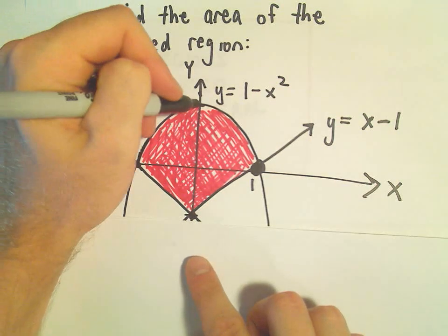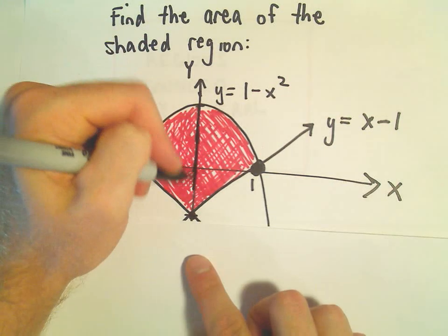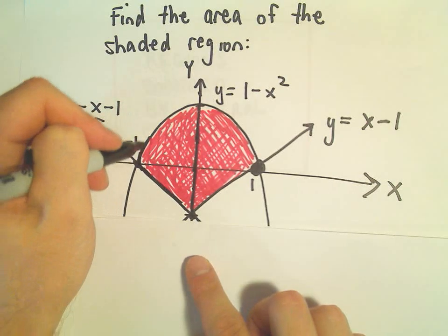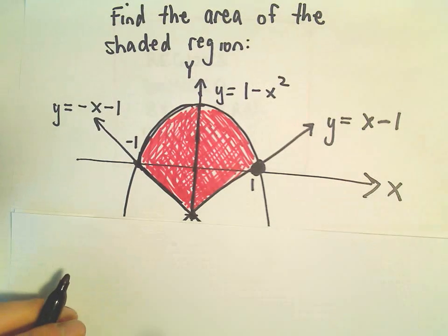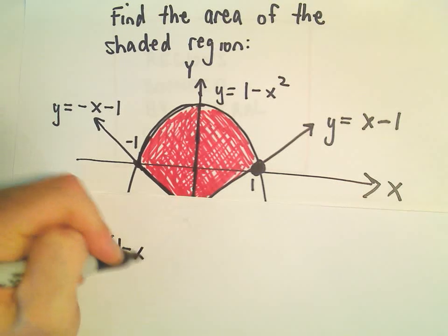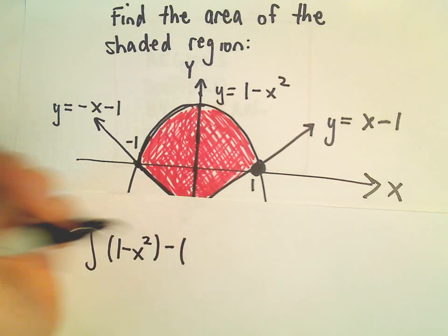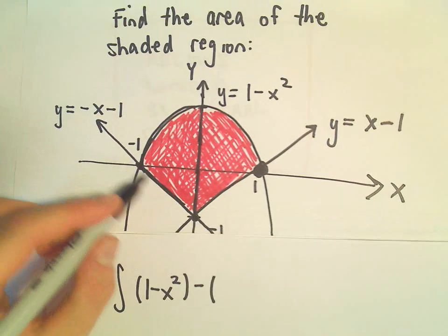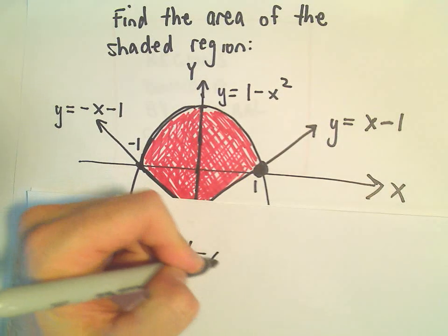Notice over the left half here, the function on top would be 1 minus x squared, so that would be the first function, and then minus the bottom curve, which in this case would be negative x minus 1.